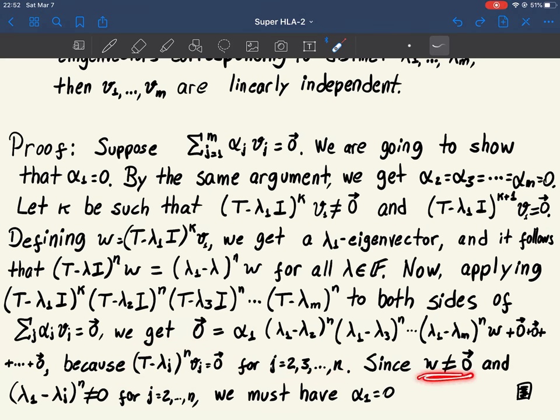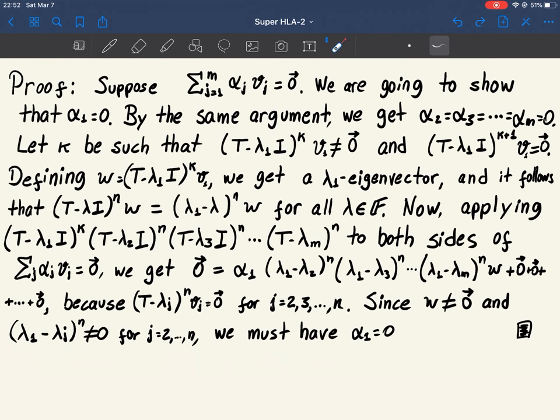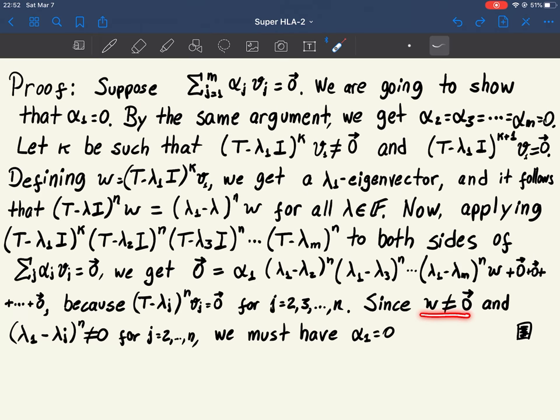But now w is not 0. Lambda 1 minus lambda m is not 0. Lambda 1 minus lambda 3 is not 0. Minus lambda 2 is not 0. Why are all these not 0? Because we are assuming these are distinct eigenvalues. So since w is not 0 and none of these numbers before it is 0, alpha 1 has to be 0. And this concludes the proof.